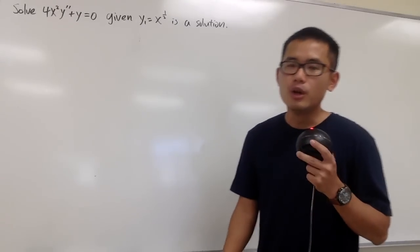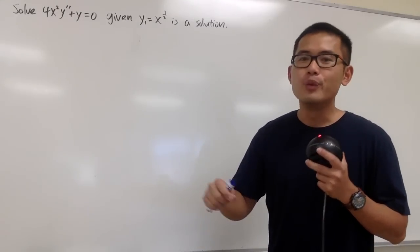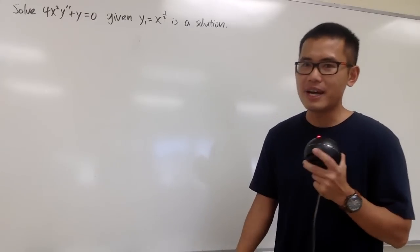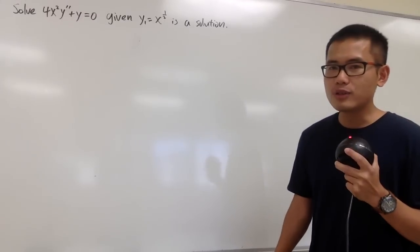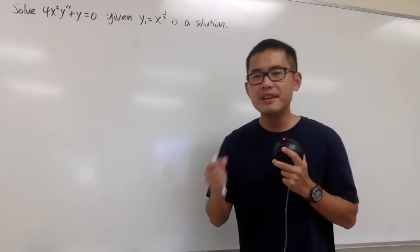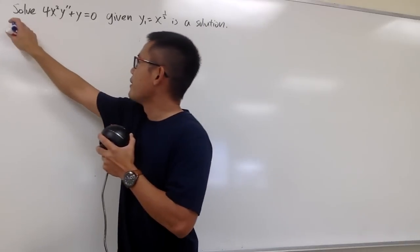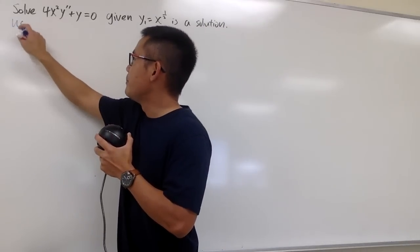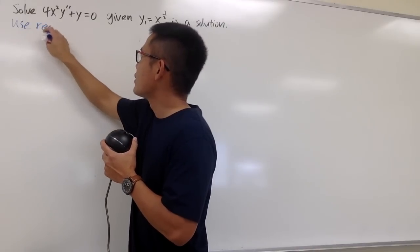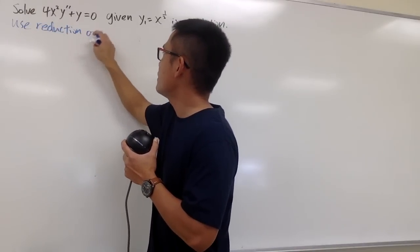Remember, whenever we're given one solution and we're trying to find the other, we can try to use the reduction of order method. And also, at the end, we have to make sure the two solutions are linearly independent. So let's get to work right here using the reduction of order.